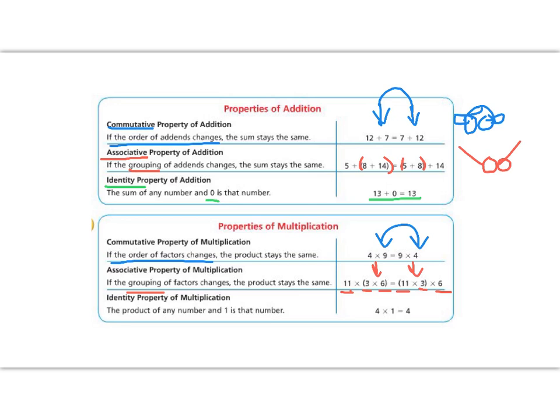We also have an identity property of multiplication. The identity property of multiplication says that anytime I multiply by the number 1, I'm going to get the same number. Your identity is like who you are, right? So I'll put a little smiley face for the identity property. It's who you are. 4 times 1 is 4. 5 times 1 is 5. As long as you multiply it by 1, it's going to stay the same, because that's its identity.